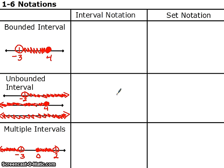We'll use both kind of interchangeably throughout the year. So we have three different types of intervals: bounded interval, where you have points on both ends; unbounded interval, where at least one end has an arrow on it; and multiple intervals, where you've got an interval, then a space, and then another interval.